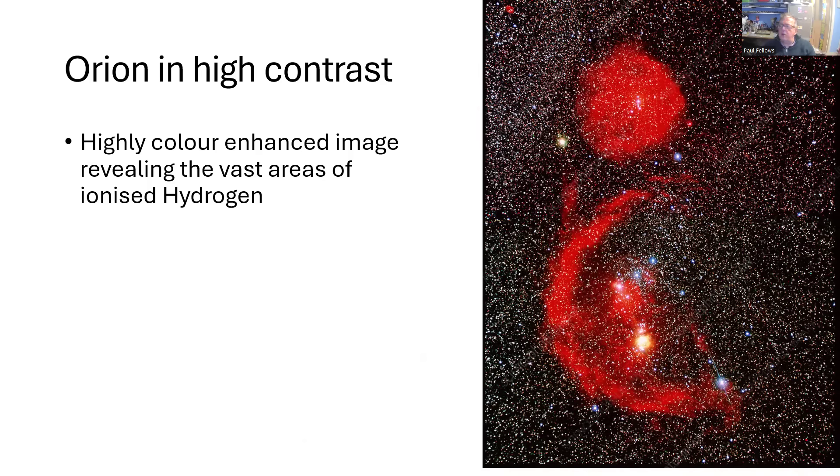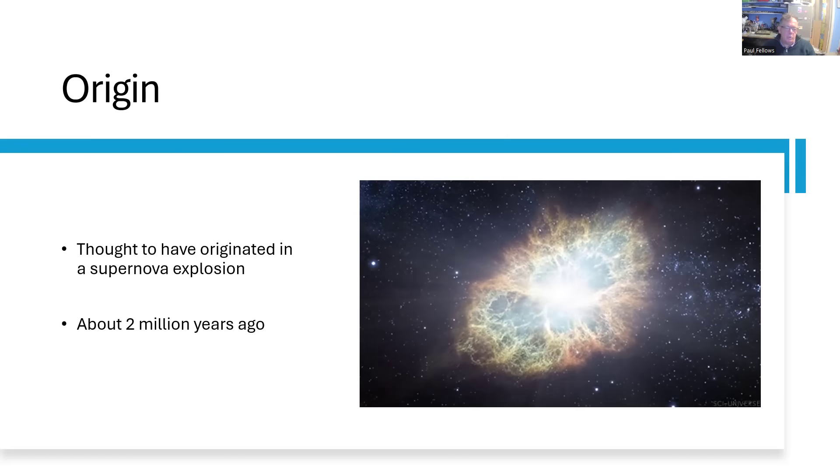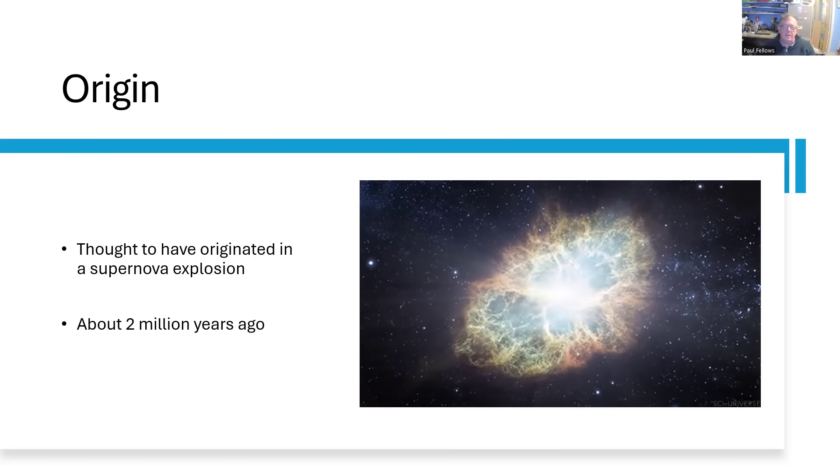So what do we think is going on here? Well, what we believe is that there was a supernova explosion about 2 million years ago in the Orion Nebula region. And the animation on the right here is an attempt to show what a supernova would look like. It's an animation of the Crab Nebula. It's somewhat cheating, but it gives you the idea of this expanding shockwave. And that's what we're seeing 2 million years down the road as Barnard's loop.